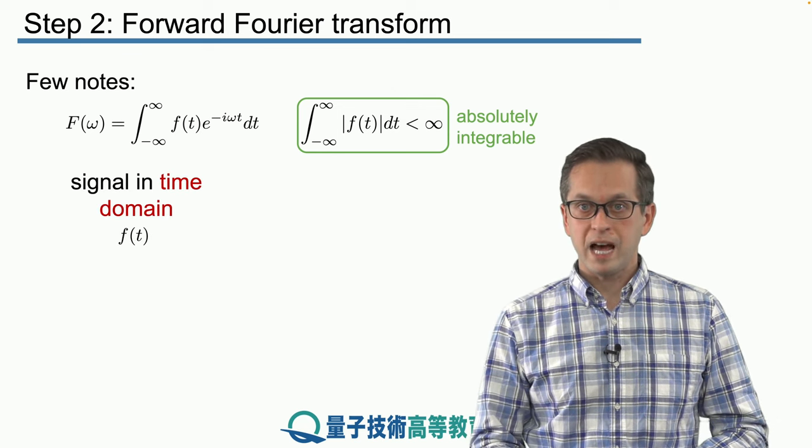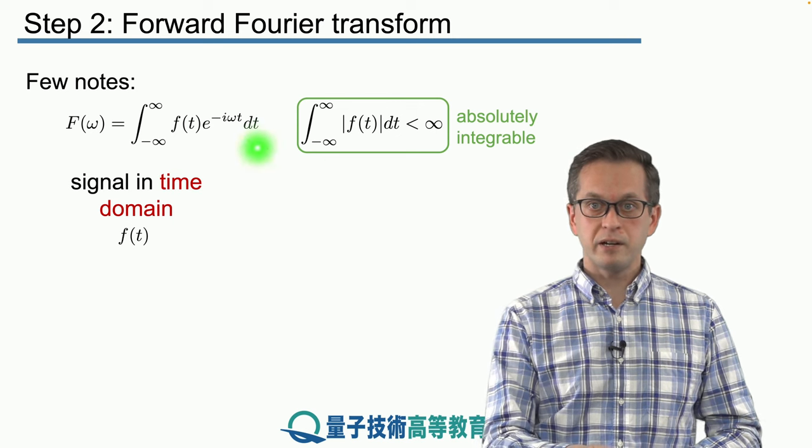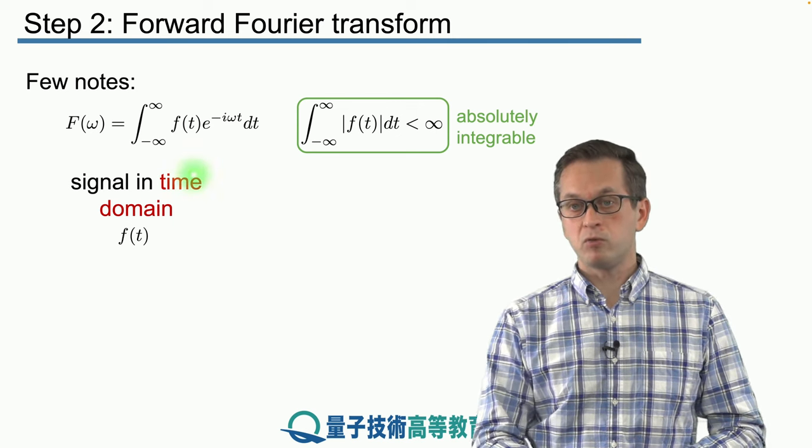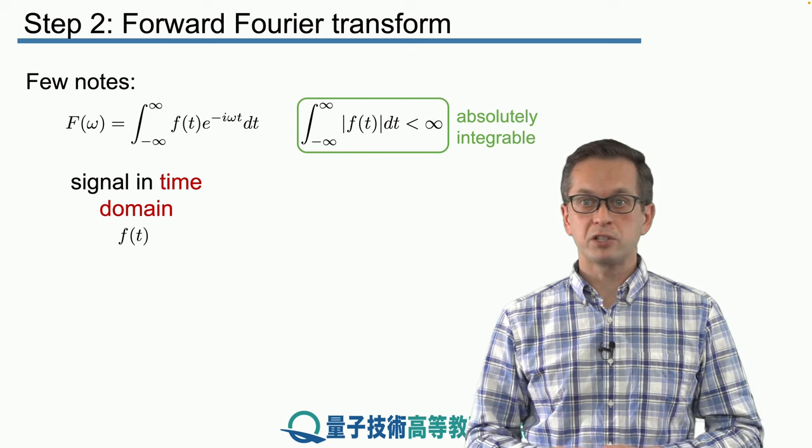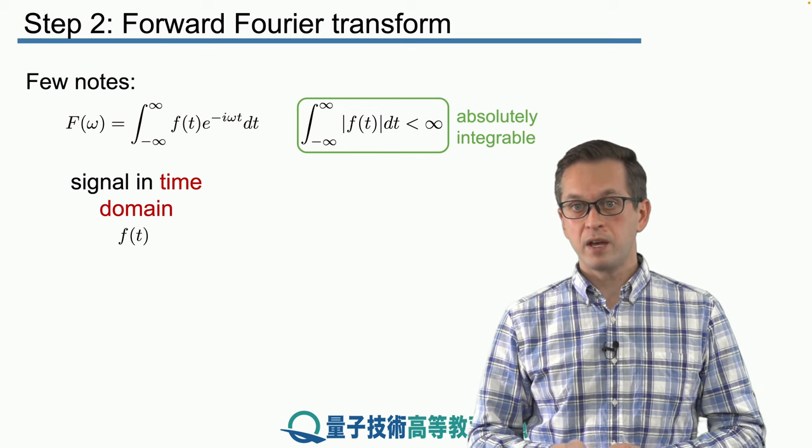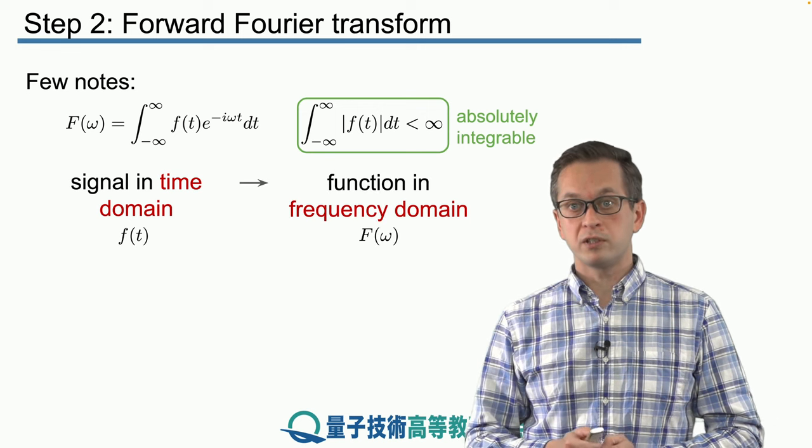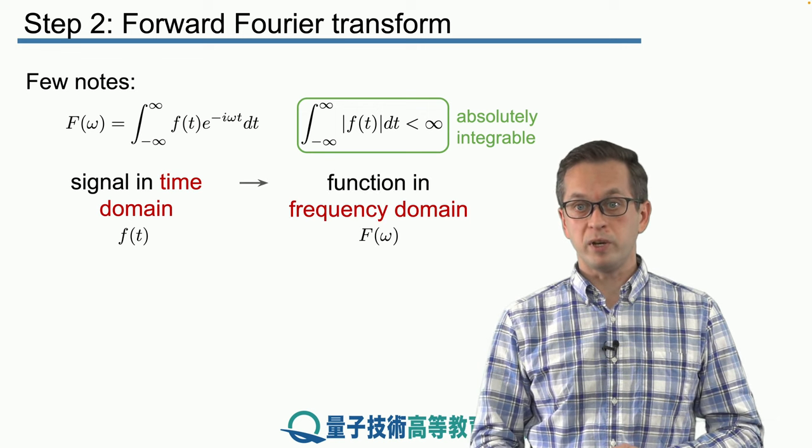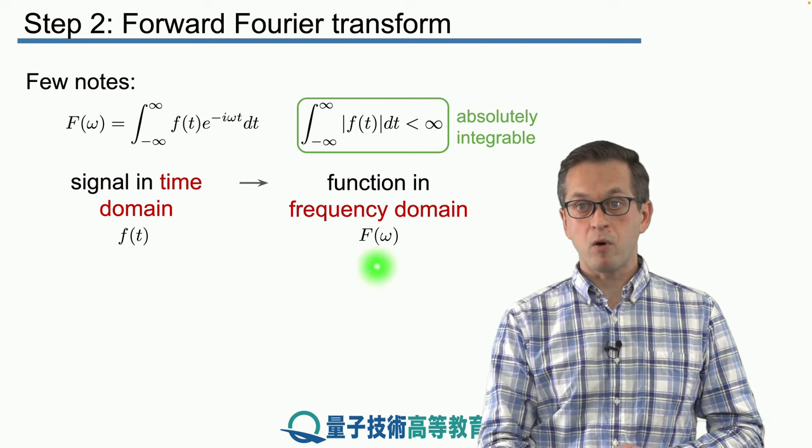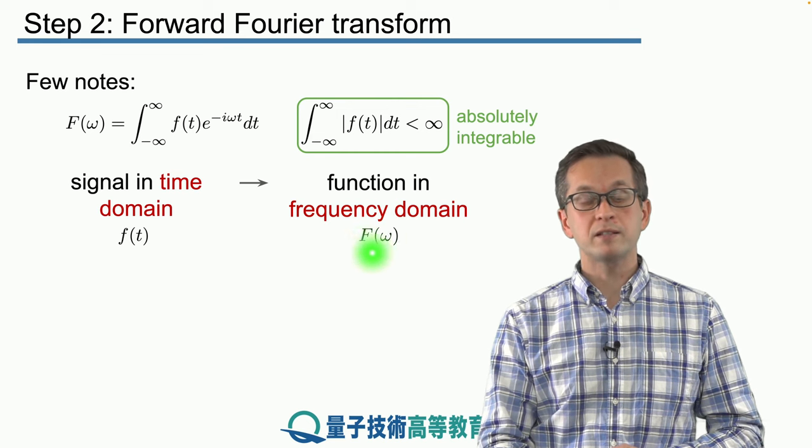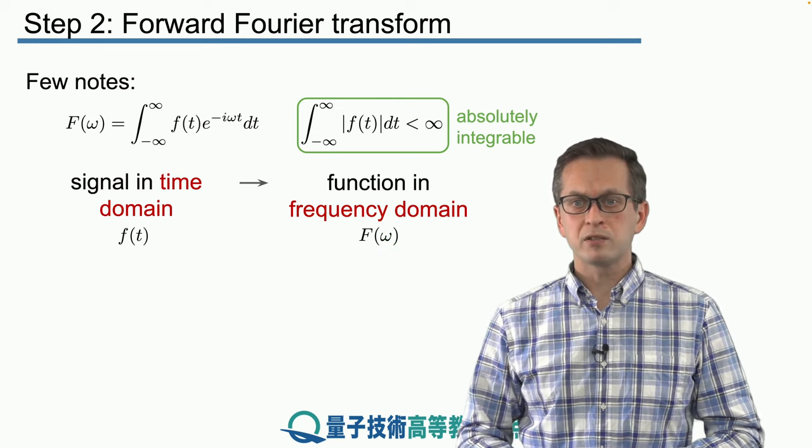Next, what really happens here is that we are starting with some function in the time domain. It could be your cos function, it could be a delta function, it could be some complicated signal. And what we are doing is we are transforming it into a new function that's defined on the frequency domain. This function capital F of omega. Remember these omegas, they're continuous frequencies.